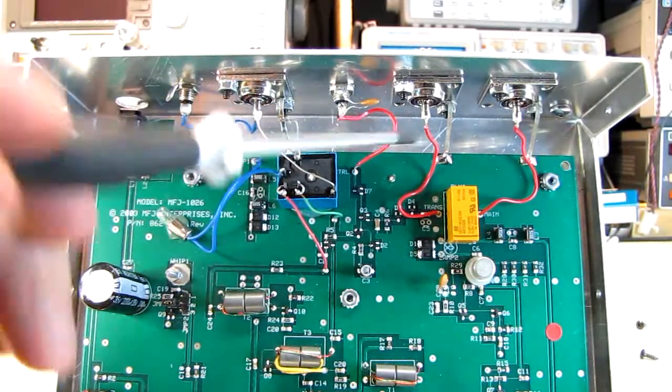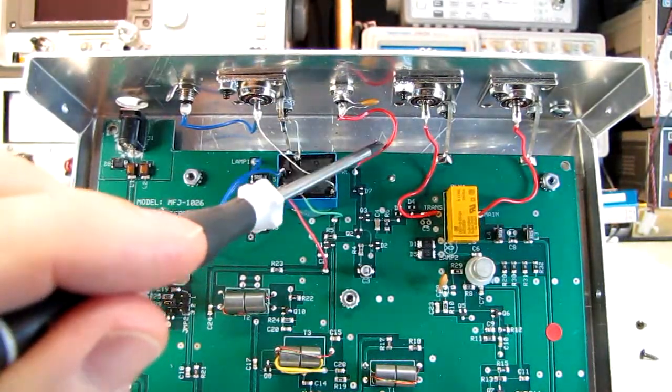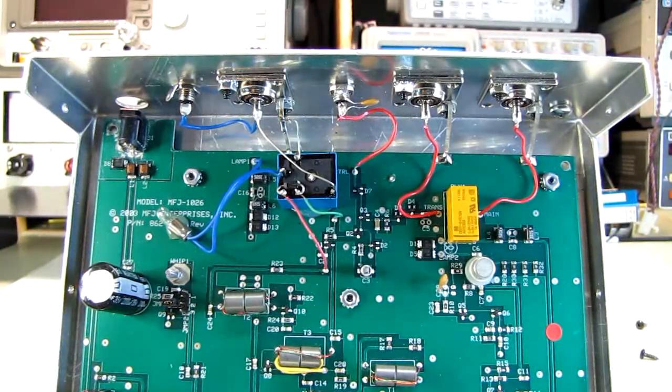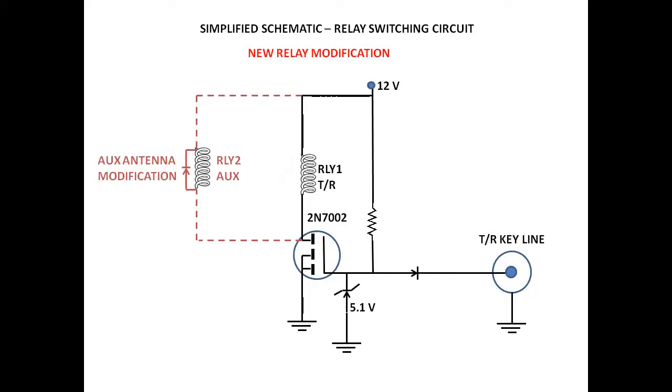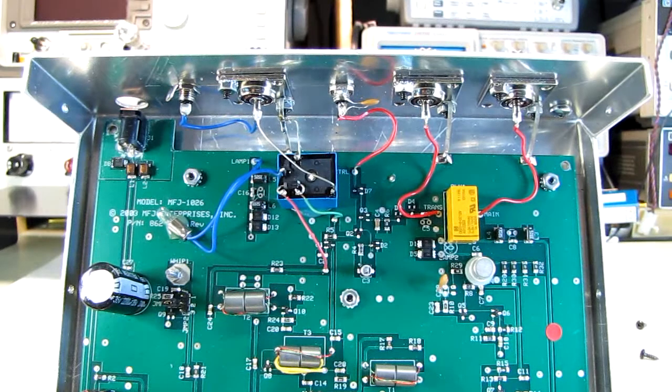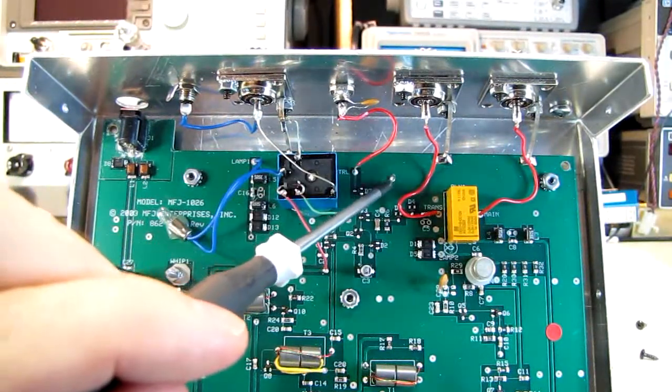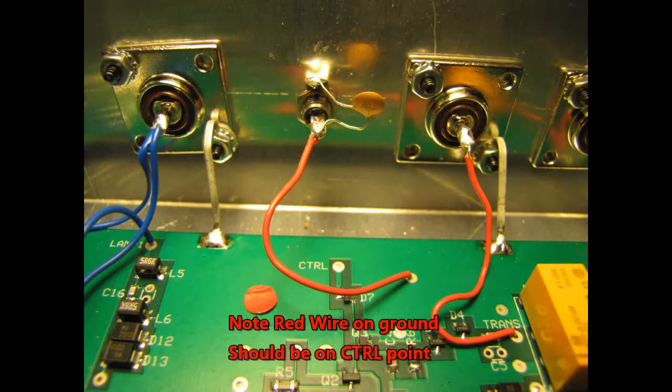That's when I discovered that this red wire right here, which is supposed to go to the switching circuit, was actually connected over here to this ground terminal. Here's a partial schematic of how that operates. Basically, I was grounding the ground, and it did absolutely nothing, so that was non-functional. We fixed that problem.